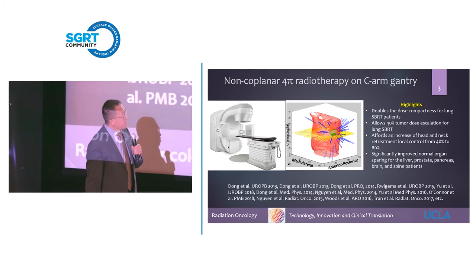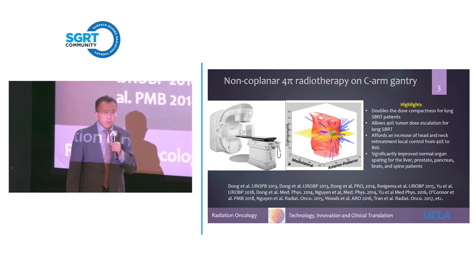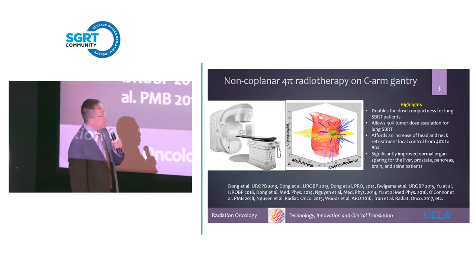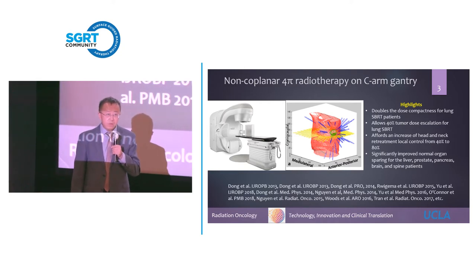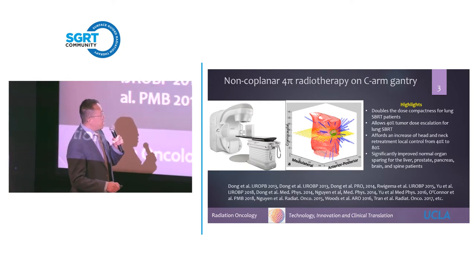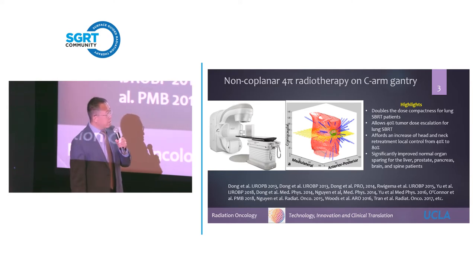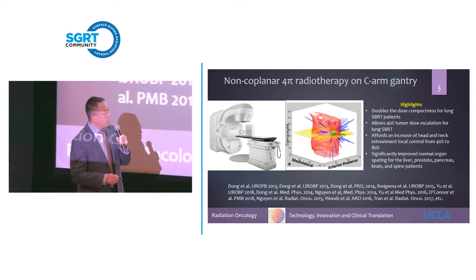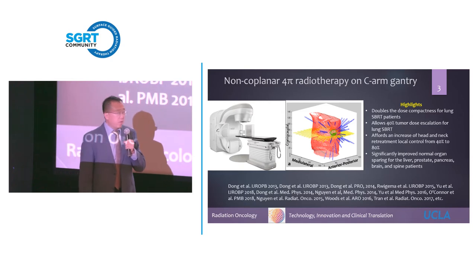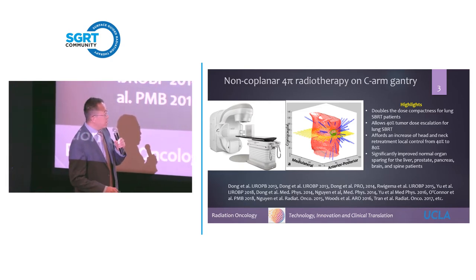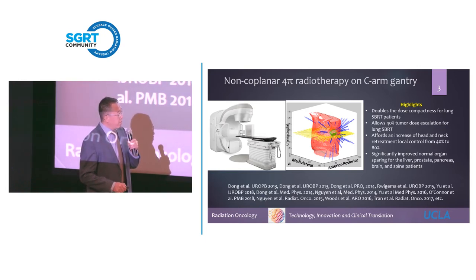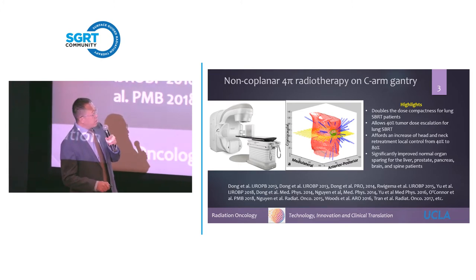For example, for lung cancer patients, we showed that we can double the dose compactness — or in other words, reduce the R50 by about 50% — which allows us to escalate the tumor dose by 40% without increasing surrounding normal tissue dose. For head and neck cancer patients, we showed that we can increase local control for retreatment from 40% to 80% with safe dose escalation. We also showed significant improved normal organ sparing for the liver, pancreas, prostate, brain, and spine patients.